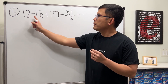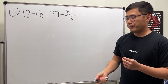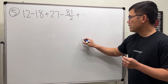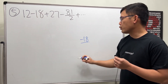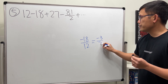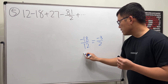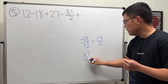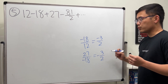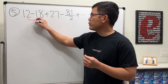For number five, we have 12 minus 18 plus 27 minus 81 over 2 and so on. To find the common ratio, take a term and divide by its previous: negative 18 divided by 12, reduce by 6, gives negative 3 over 2. Try another pair: 27 divided by negative 18, reduce by 9, also gives negative 3 over 2. So the common ratio is confirmed to be negative 3 over 2.